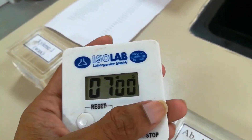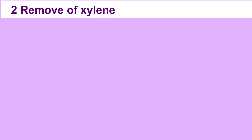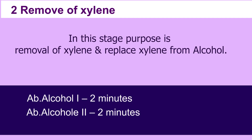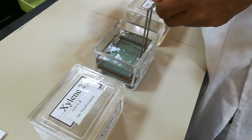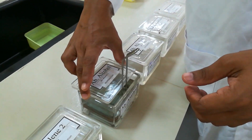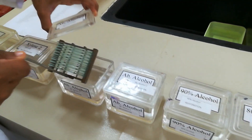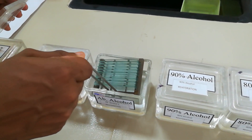In this stage, the purpose is removal of xylene and replacing xylene with alcohol. Dip in absolute alcohol one for two minutes, then dip in absolute alcohol two for two minutes.